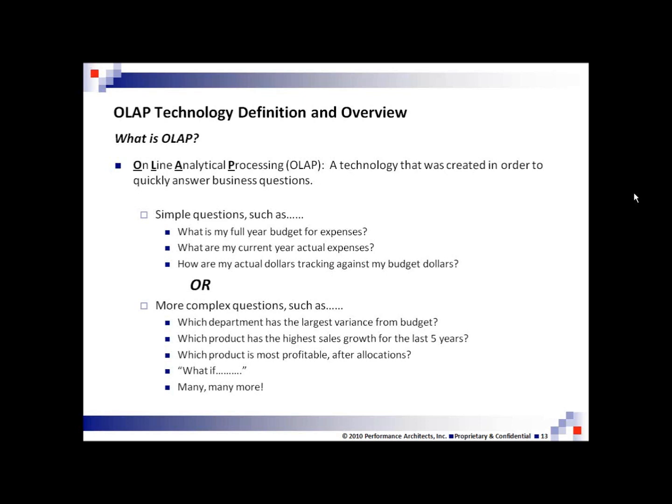Or perhaps some more complex questions, such as what you see here. Which department has the largest variance from budget? Which product has the highest sales growth for the last several years? Which product is most profitable before or after allocations? Any number of what-if types of scenarios: what if my revenue goes up 5%? What if my costs go down? What if my costs go up? What if we hire a certain number of people? Anything you can really think of, this type of tool is meant to handle.